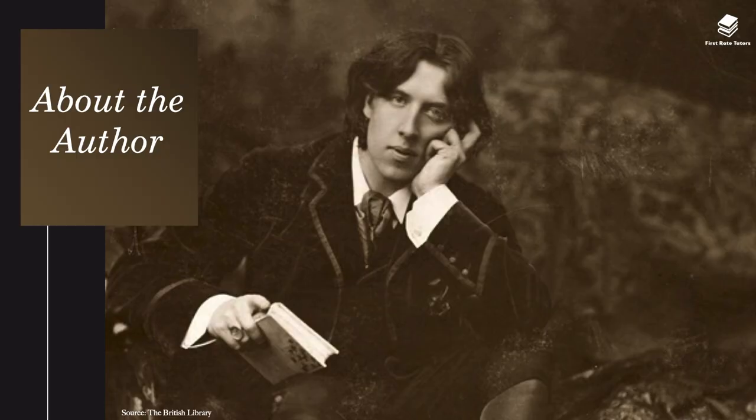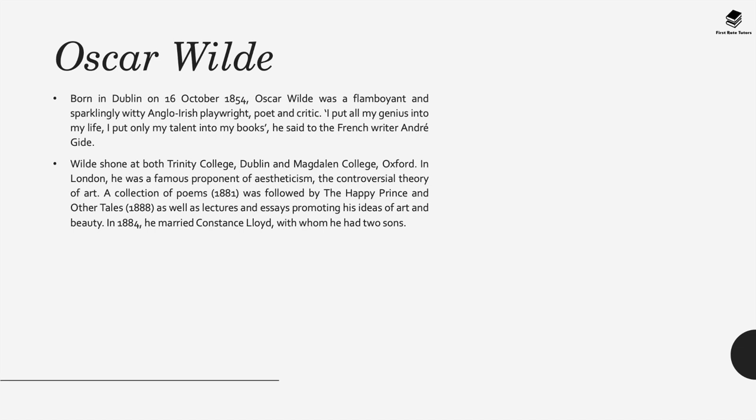To understand this book you need to understand a little about the author himself. Oscar Wilde was born in Dublin in 1854. He was very flamboyant and witty—a playwright, poet and critic. He went to Trinity College in Oxford and became a famous proponent of aestheticism, a controversial theory of art. His best known book is The Picture of Dorian Gray.